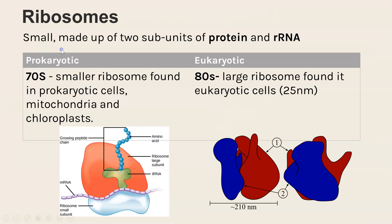Looking at ribosomes — both prokaryotic and eukaryotic cells have ribosomes. Ribosomes are very small and made up of two subunits, which we can see here represented by two different colors. They are made up of proteins and rRNA.